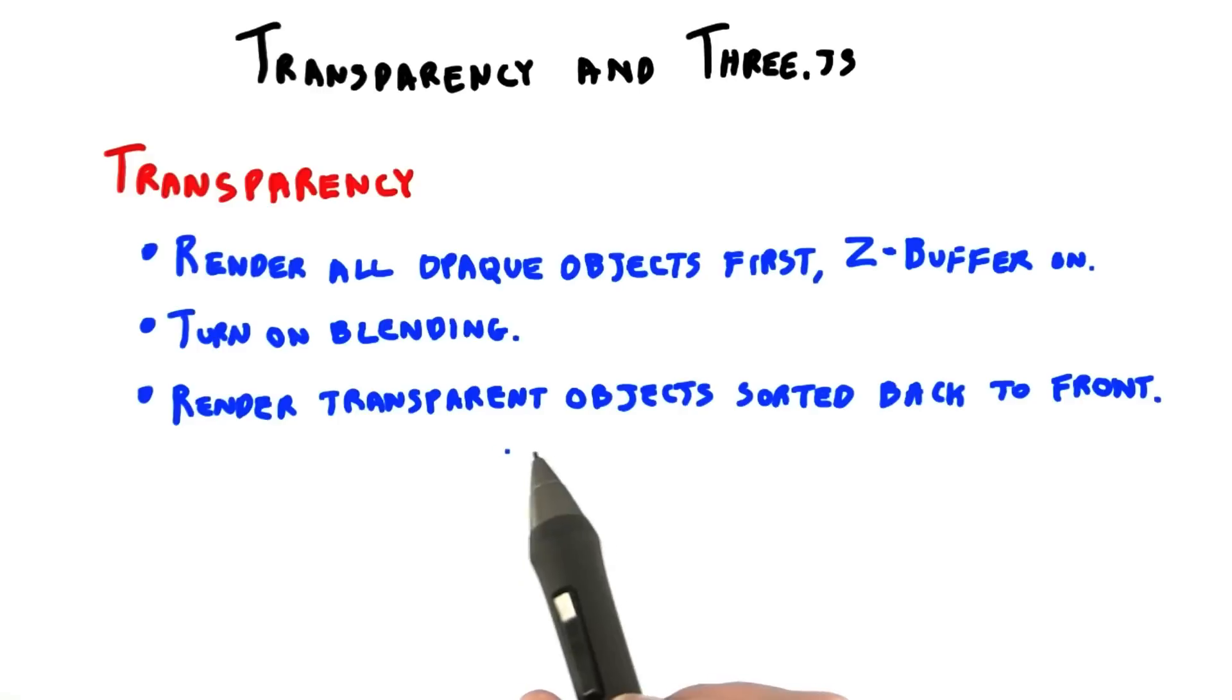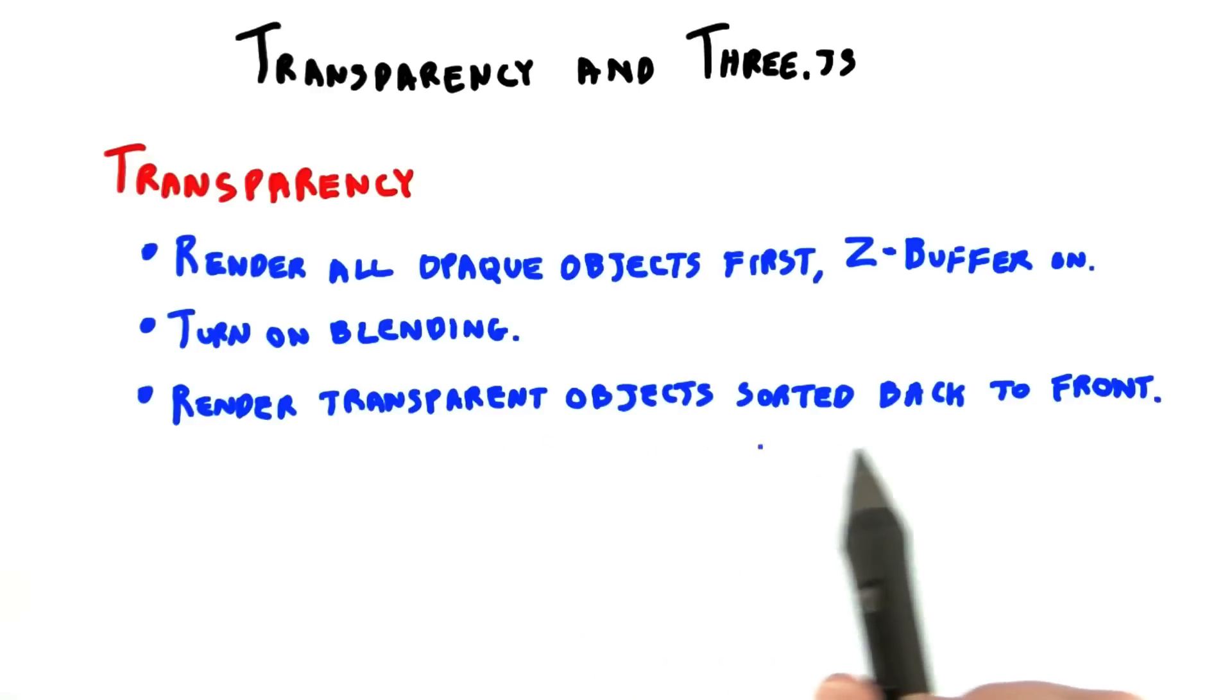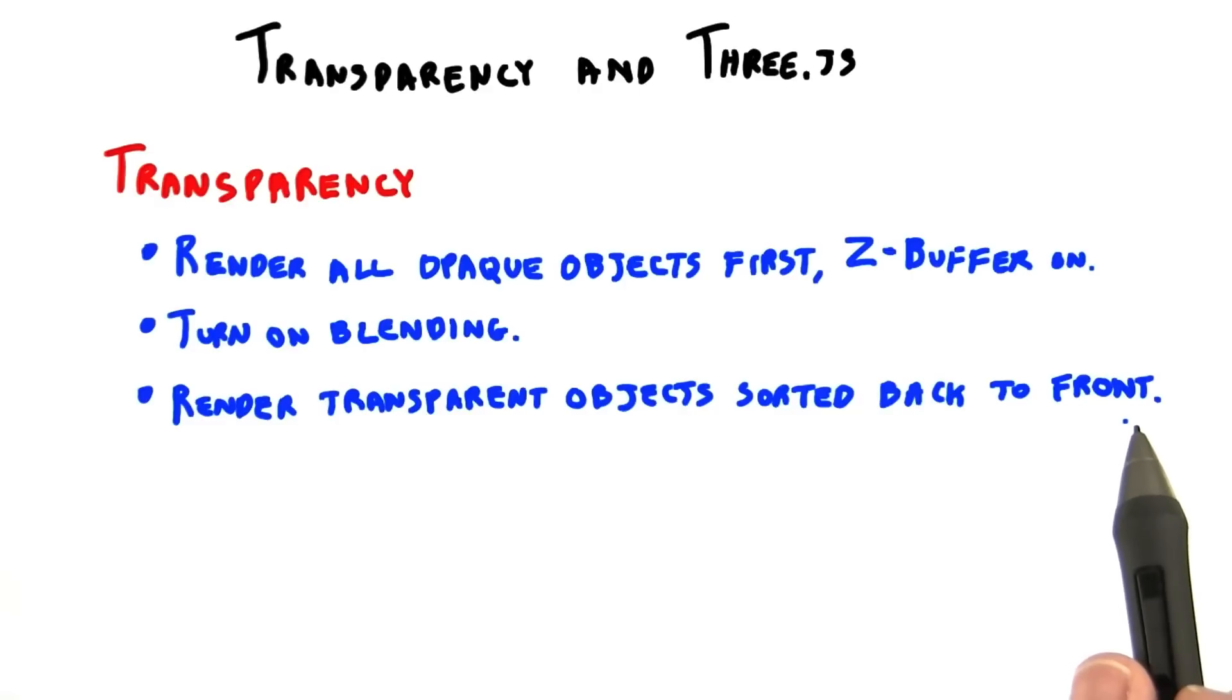Finally, the transparent objects are sorted by their distance along the view and are rendered in back to front order. If the camera or objects are moving, this sorting has to be done every frame.